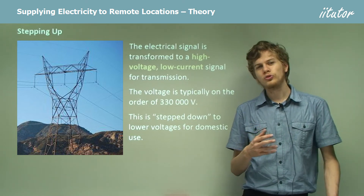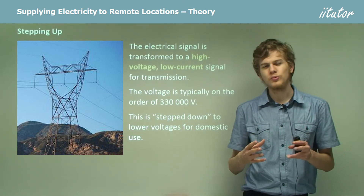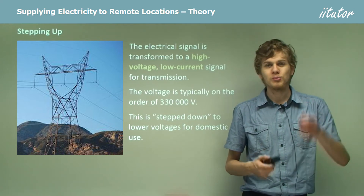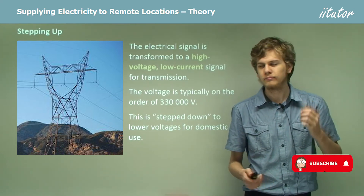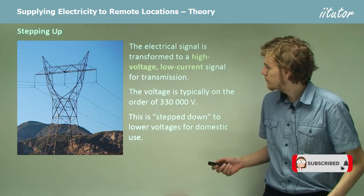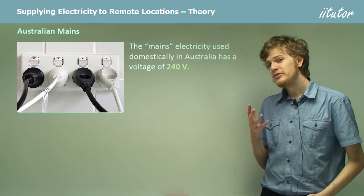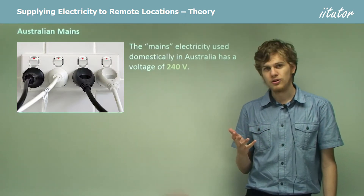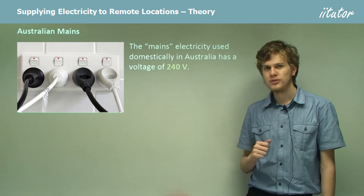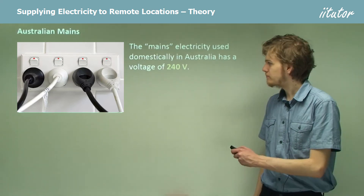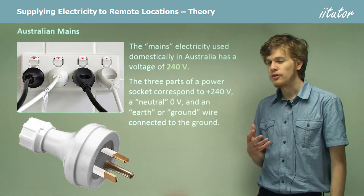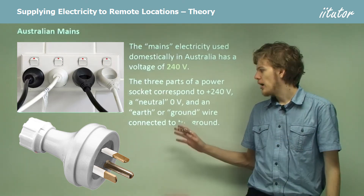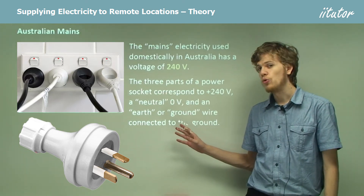You may have heard what sort of voltage we use in the power mains — that is the voltage that we get when we plug something into an electrical socket. The mains electricity has a voltage of 240 volts, though in different countries we might have a different mains voltage. The three parts of an electrical socket correspond to an active wire, a neutral wire, and an earth or ground wire.